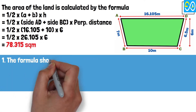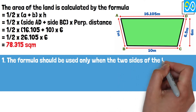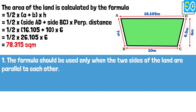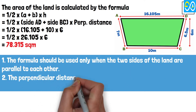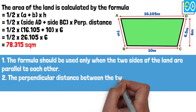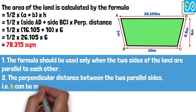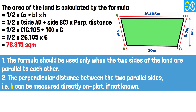Note: 1. The formula should be used only when the two sides of the land are parallel to each other. 2. The perpendicular distance between the two parallel sides, that is H, can be measured directly on the plot if not known.